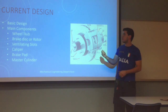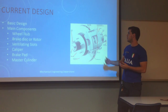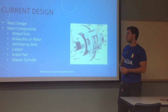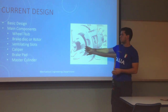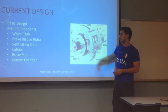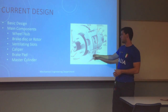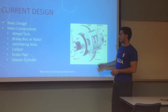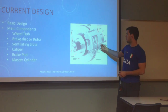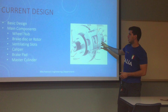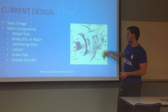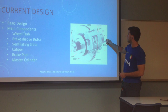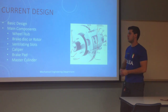Now talking about current design: the basic components of the system are the wheel hub, which is where the rim and wheel go; the brake disc or rotor, which has ventilated slots to better help dissipate heat; the caliper, which houses the brake pads; the brake pads; and the master cylinder, which is where the hydraulic fluid and pistons are located.